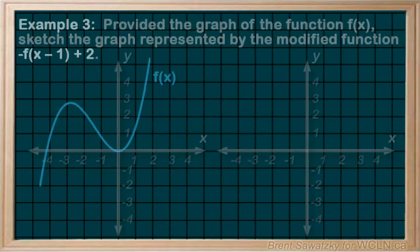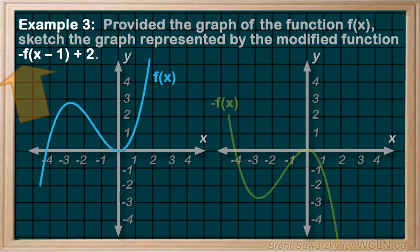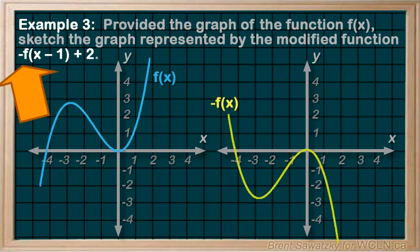Example 3: Provided the graph of the function f in terms of x, sketch the graph represented by the modified function. First, let's recognize the vertical reflection indicated by the negative out front here.